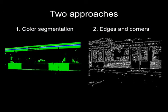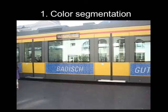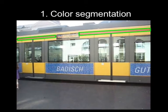First I am going to explain the idea behind the color segmentation approach. So let's go back to the original image. The idea to find the doors is fairly simple. Using color segmentation we are trying to detect the red line here at the top of the tram.